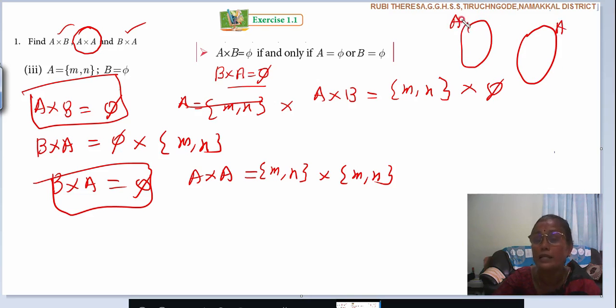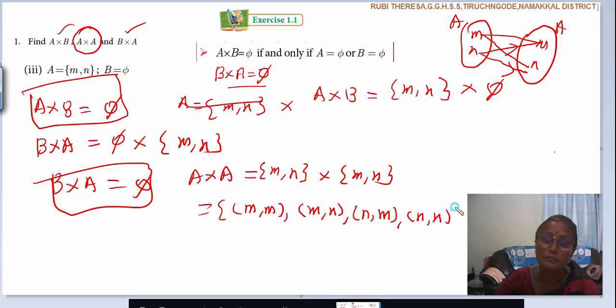But while you are writing, you should write A, A. By mistake, you don't write B. What is it? M, N. M, N. M is paired with M and N. M, M. M, N. Similarly, N is paired with M, N. So N, M. N, N. This is one way of pairing.